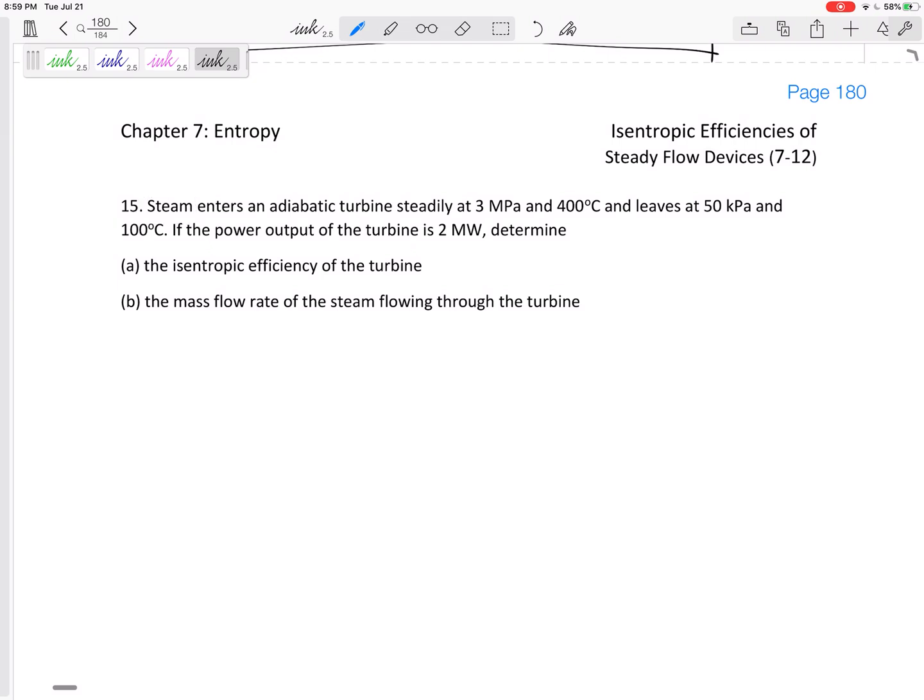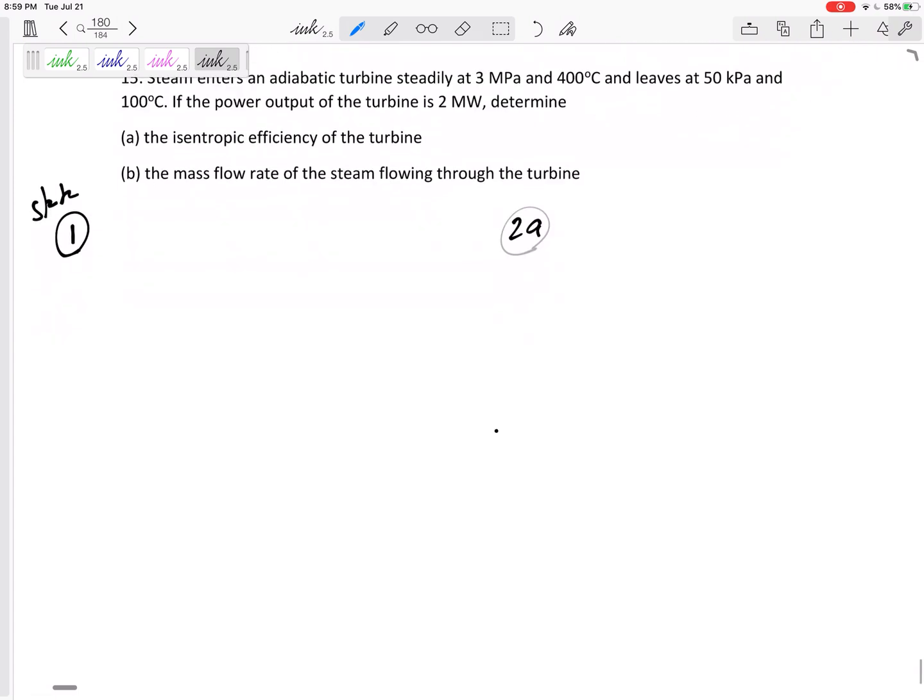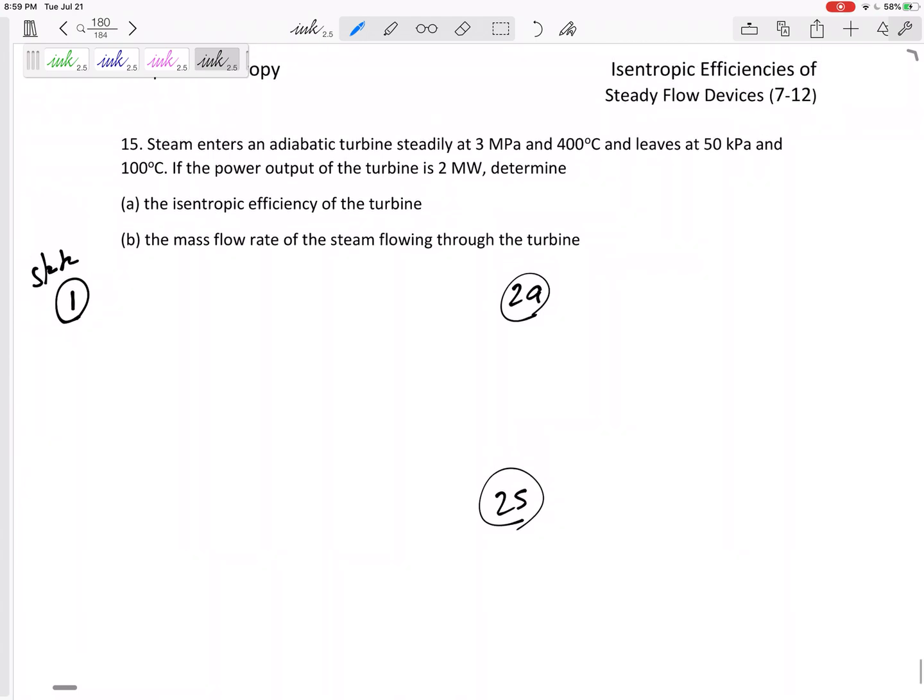All right, this is what I like to do. I like to write what's happening at state one, and then state two actual, and state two isentropic. So I've got state one, then state two actual, and state two isentropic. At state one it is 3 MPa and 400 degrees C. It leaves at 50 kPa. The pressure actual and the pressure isentropic are the same - we assume it is still operating between the same pressures.